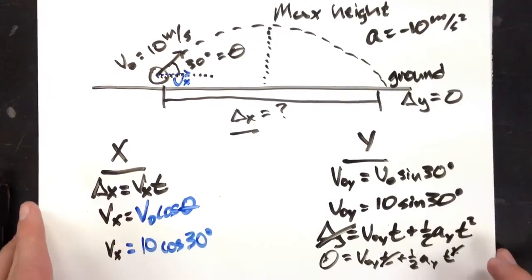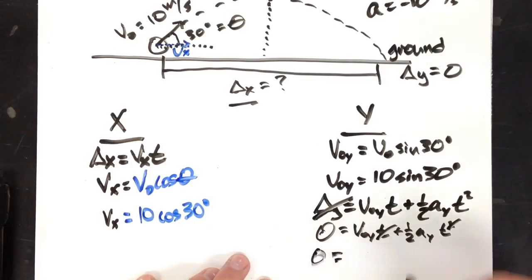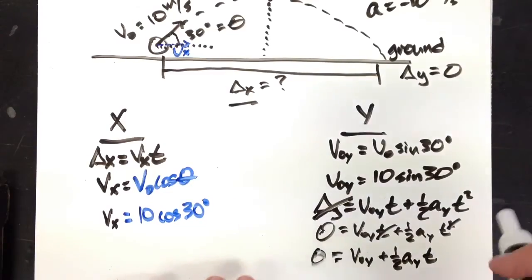Now I have 0 equals v0y plus 1 half ay t. Subtract over and solve for time. You can take that time, plug it in, and solve for delta x.